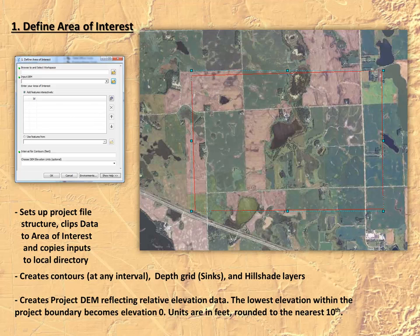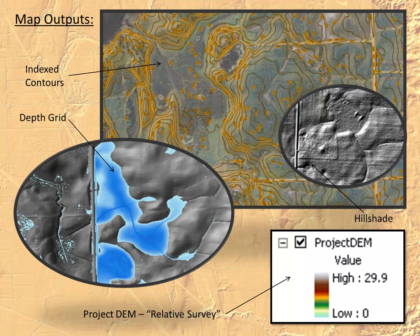In step one, you basically either draw a polygon mask or provide an existing boundary to clip down a DEM and set up your project data structure. We also create contours at any interval, kick out a depth grid showing where water would pool as it moves across the landscape, and use a hillshade for 3D visualization. A key part here is we create a project DEM reflecting relative elevation data, where elevation is rounded to the nearest foot or tenth of a foot, and the lowest elevation in your project area becomes elevation zero.